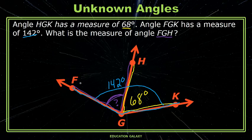So let's think about this. If the total measurement for FGK from here to here is 142, and the measurement from HGK is 68, this is like a part, part, whole problem. It's almost like 142 equals something, our missing angle, plus 68.